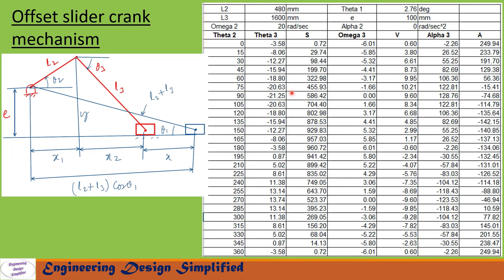Now that all the necessary equations have been derived, let us solve a problem using Microsoft Excel. In this problem we have taken l2, that is the crank length, as 480 mm; l3, the coupler link length, as 1600 mm; and the offset e as 100 mm. From this geometry we can find that theta1 is 2.76 degrees.